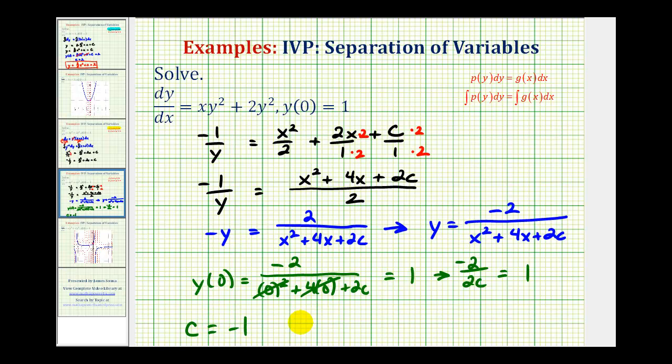So if c equals negative one, we now have our particular solution for this initial value problem. We know that y must equal negative two divided by the quantity x squared plus four x, and then if c is negative one, this would be plus negative two or minus two. This would be our solution to the initial value problem.